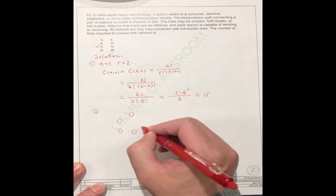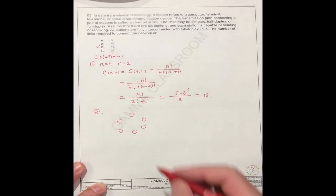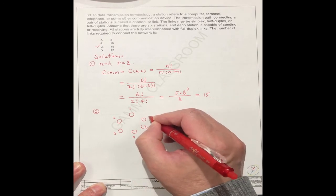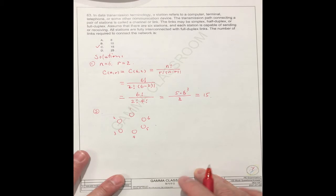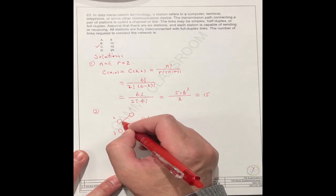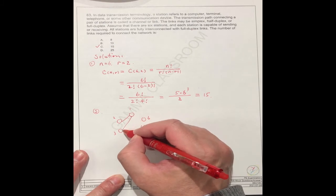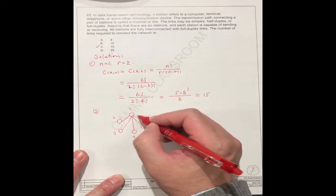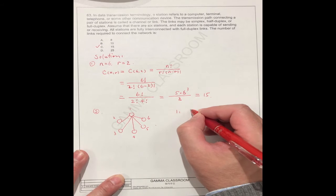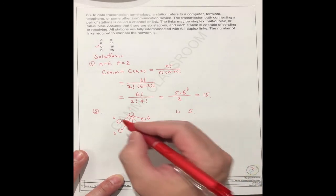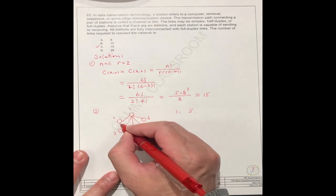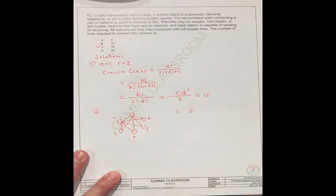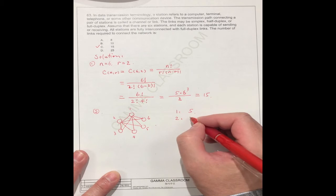We draw the 6 stations, called 1, 2, 3, 4, 5, 6. From 1 to 2 we can connect, 1 to 3, 1 to 4, 1 to 5, 1 to 6. How many? 1, 2, 3, 4, 5. So for station 1, we have 5 connections. For 2, since 1 to 2 is already connected, we have 3, 4, 5, 6, that's 4 connections.